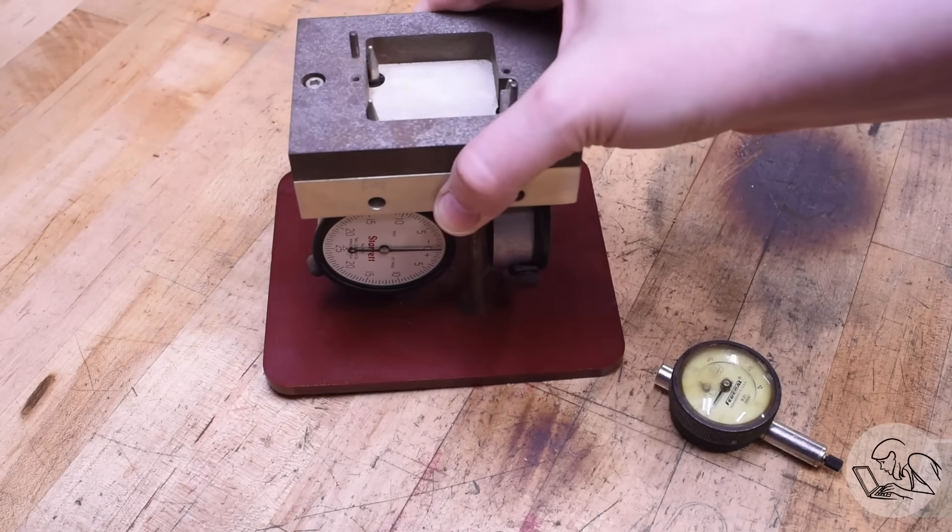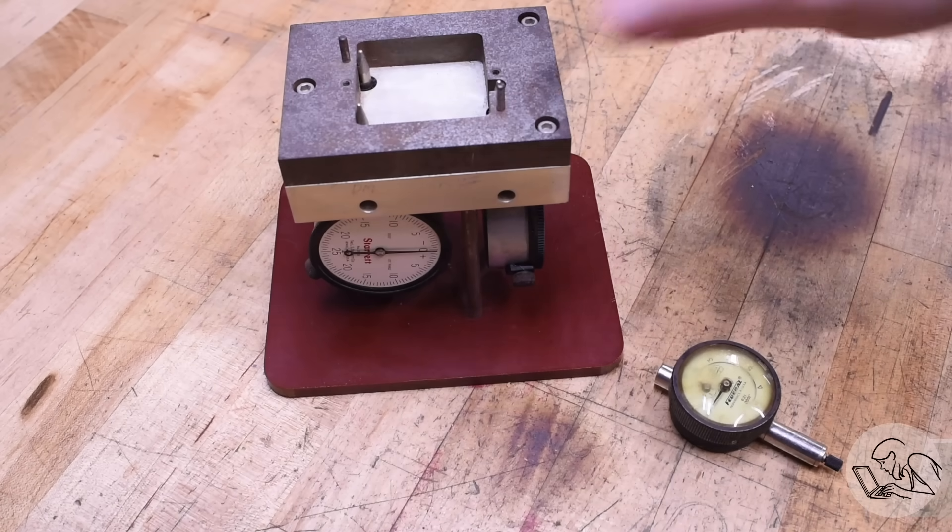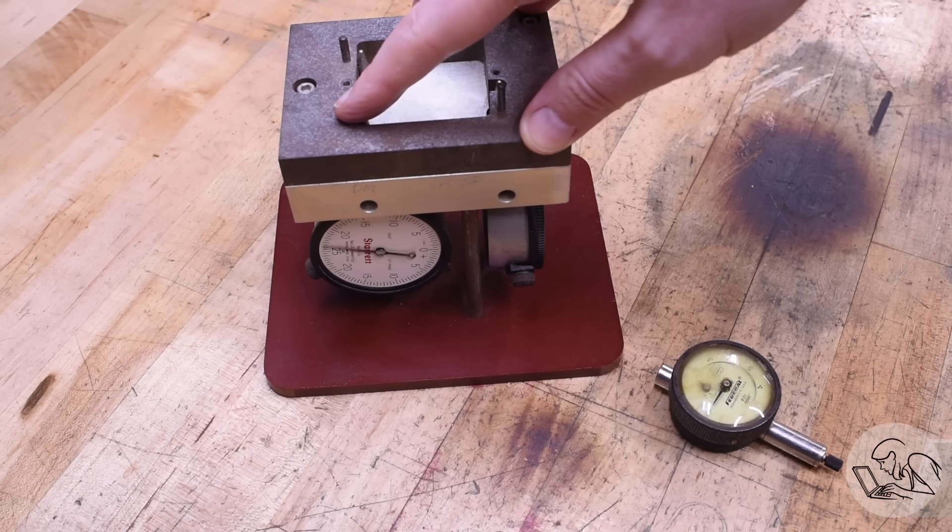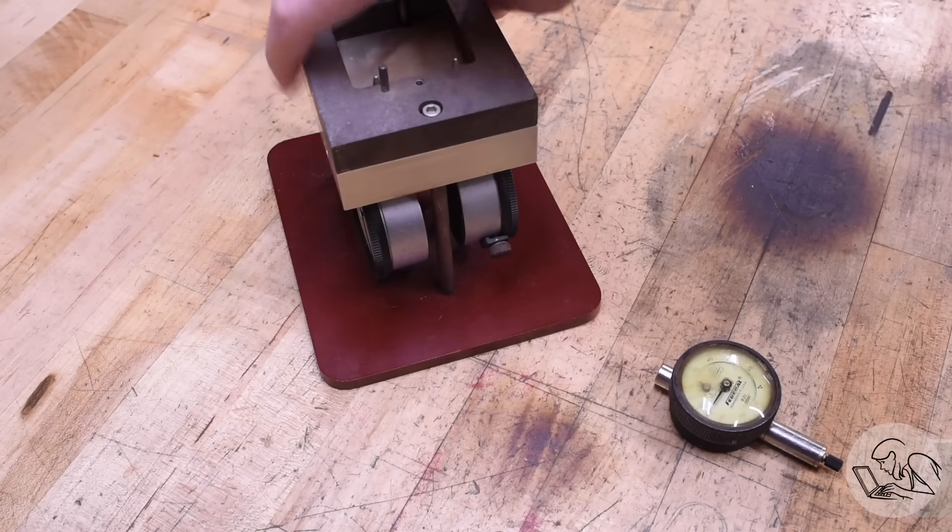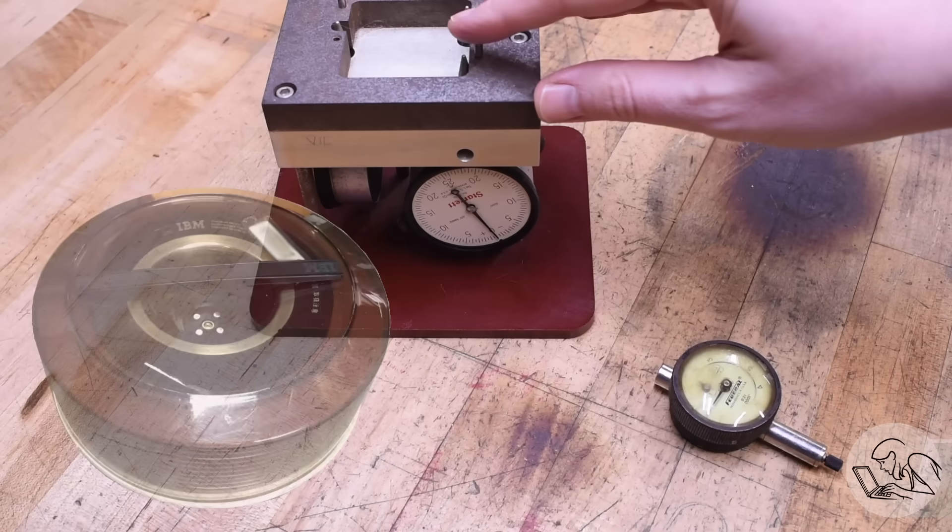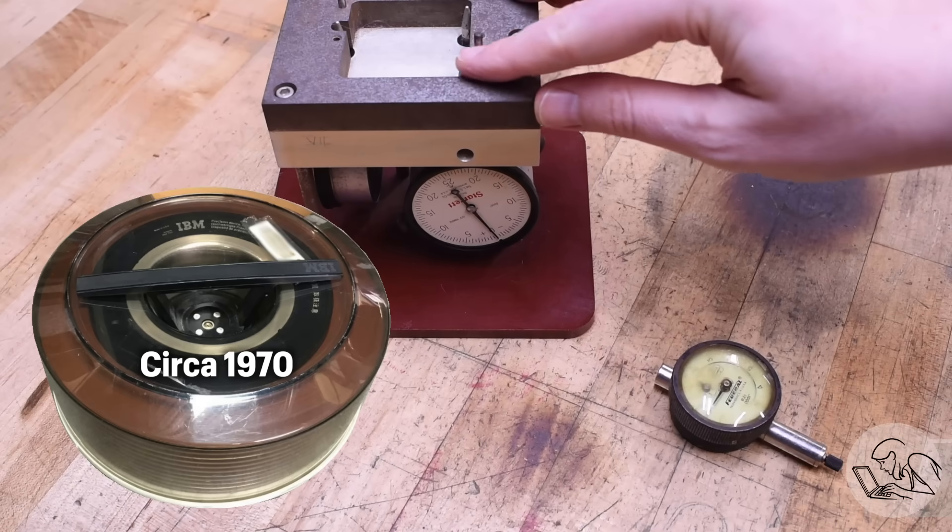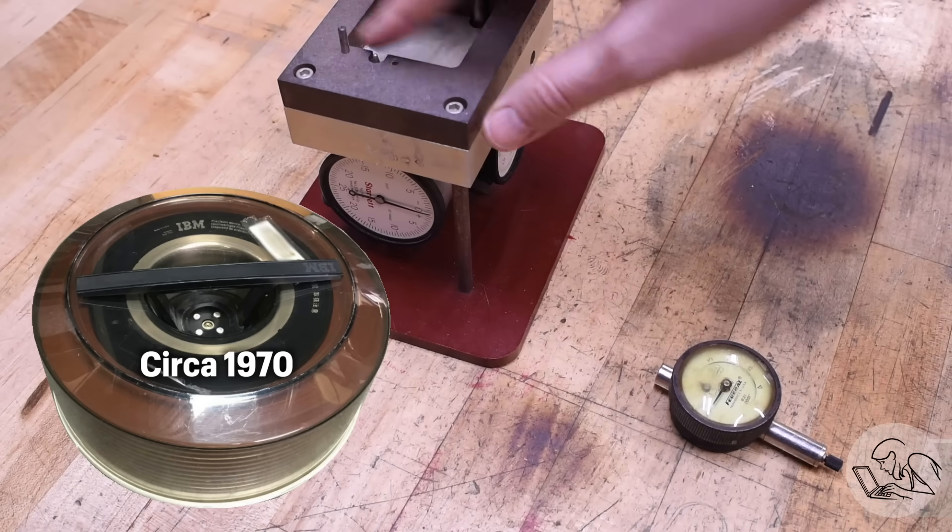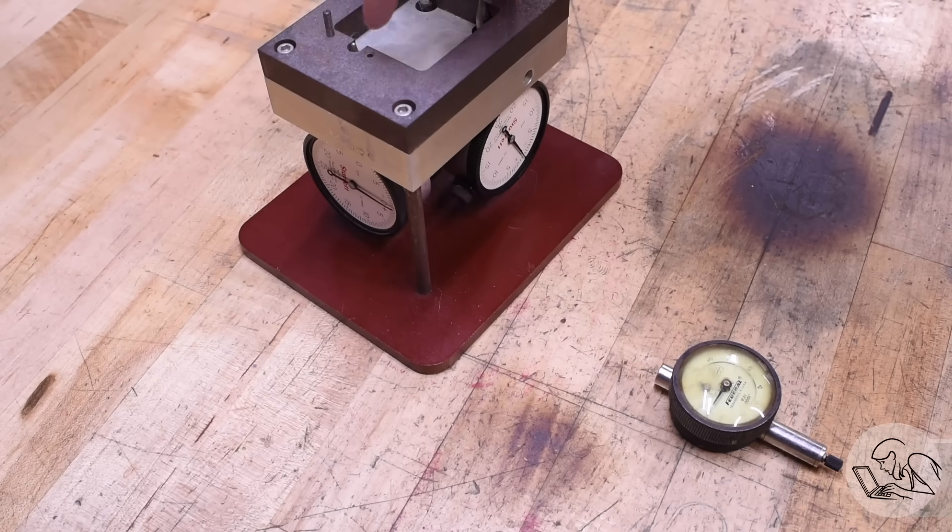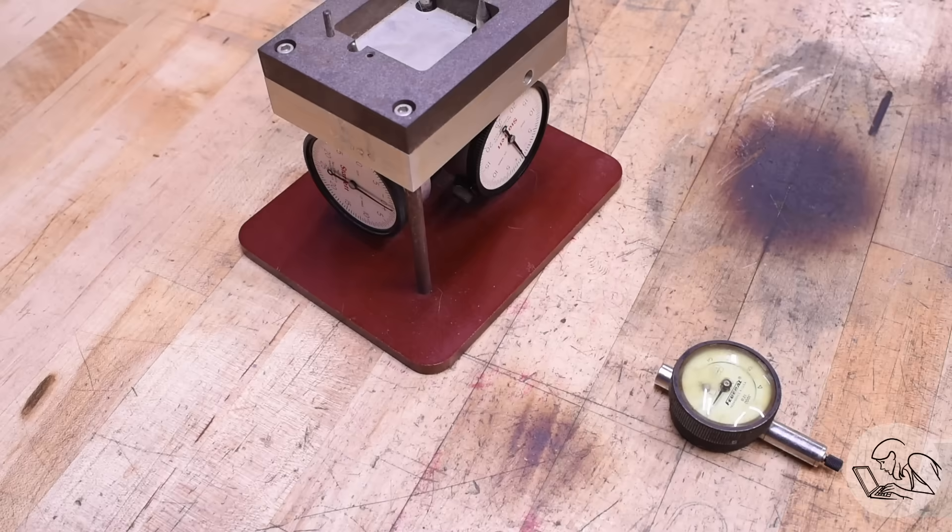Now this is not my first rodeo restoring indicators. A few years ago I bought this thing on eBay. It was listed as a fixture for balancing hard drive platters for IBM 3330 disc packs. I don't know if that's what it actually is, but really it's just three Starrett indicators arranged in a triangle and all three of them were seized up. So I want to show you that most of the time these things are actually pretty easy to get going again.